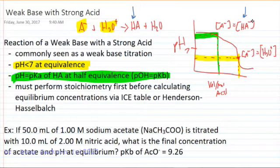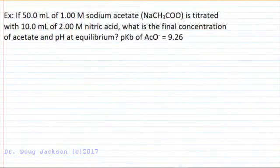Those are the important points on this curve. Equivalence happens at a certain volume of acid added. At half of that, our pH is equal to the pKa by the Henderson-Hasselbalch equation. We have to perform stoichiometry first before we calculate our equilibrium concentrations via an ICE table or Henderson-Hasselbalch equation. Let's do an example.